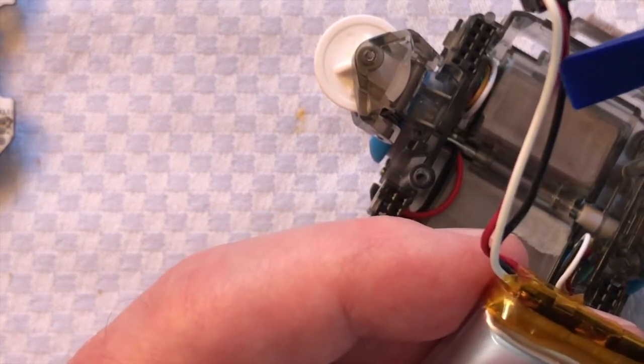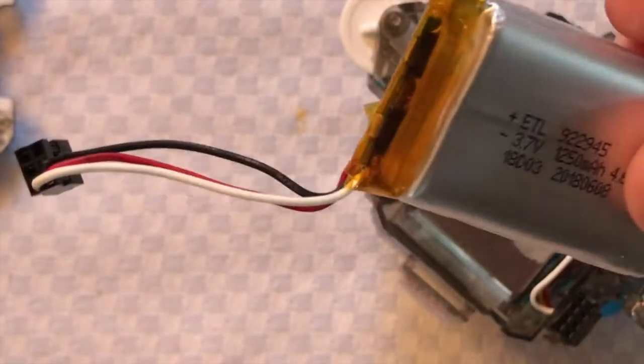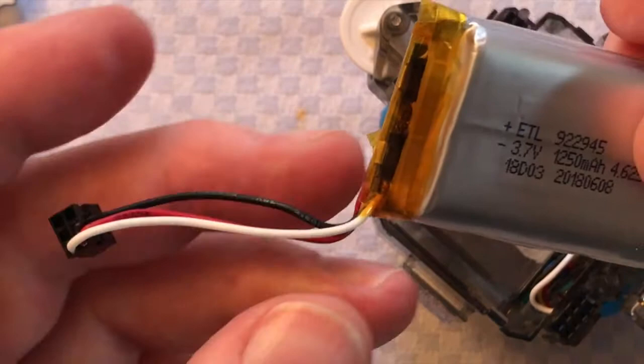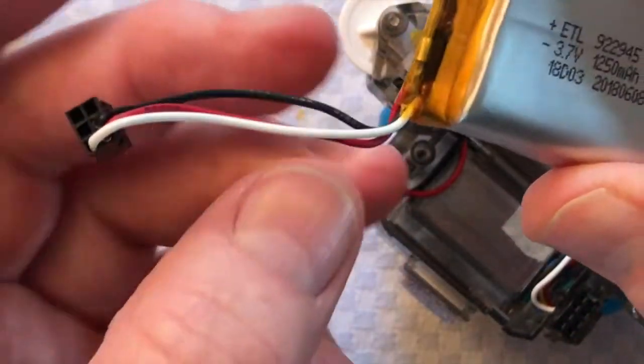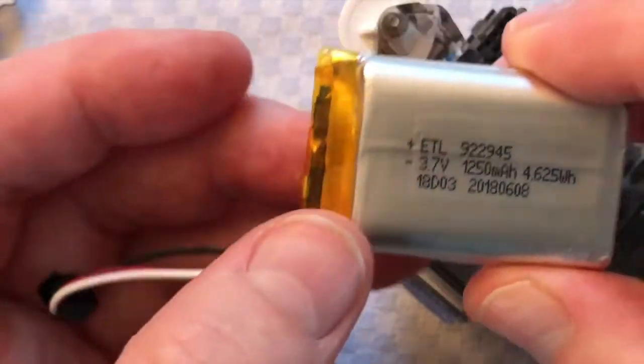Which means basically it'll have a negative and a positive, and then it's also got a thermistor in there. And the reason for that is that when you charge a battery that's this large, there's a possibility of overheating, and that will cut off the overheating and prevent the battery getting damaged or bursting into flames.